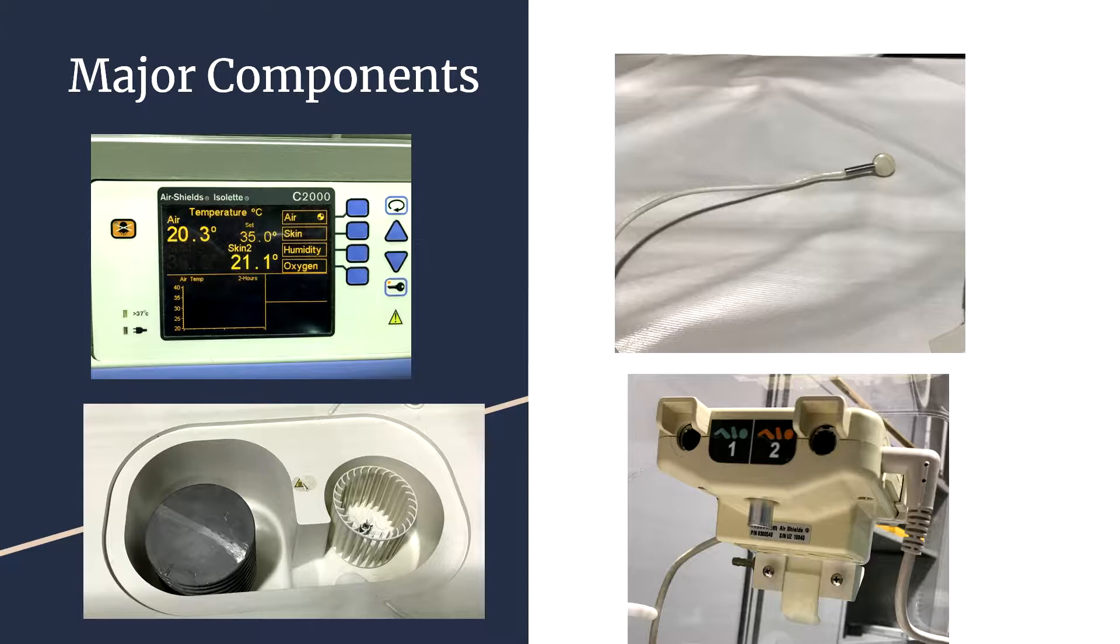Here are the major components. On the top left is the front screen. Most of the operations can be done through this. It displays information on air temperature, skin temperature, humidity, and oxygen content inside the infant incubator. You can also adjust the temperature and humidity according to your needs.